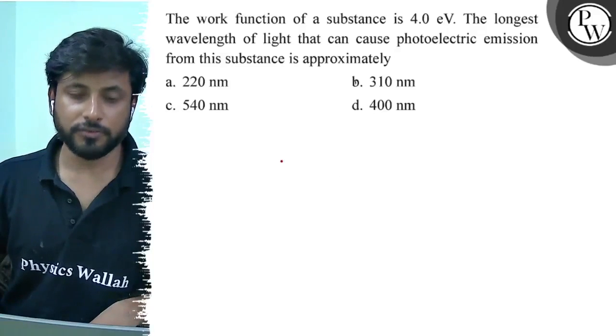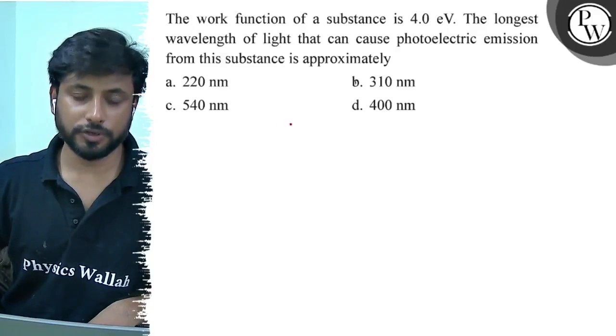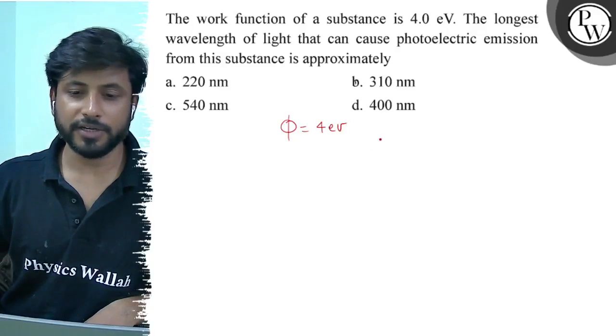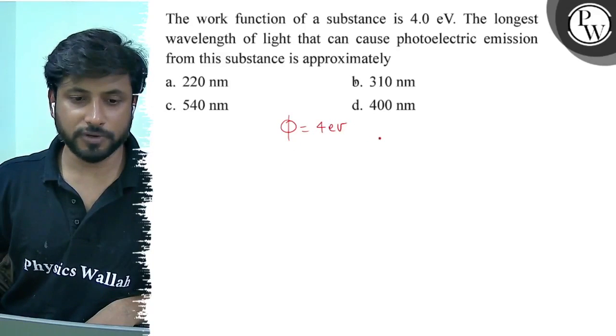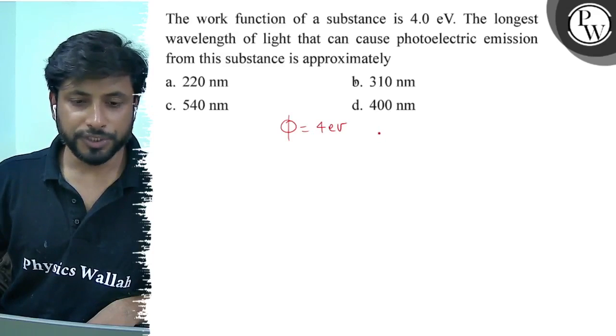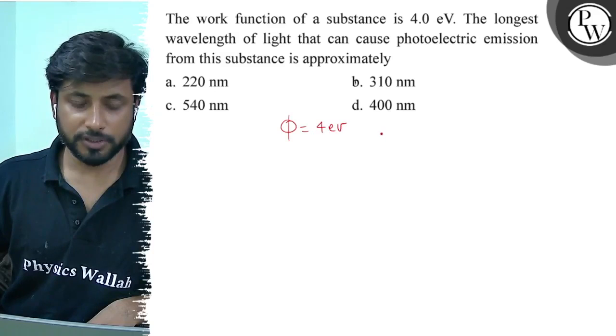Hello, let us see this question. The work function of a substance is 4 electron volt. The longest wavelength of light that can cause photoelectric emission from this substance is approximately 220 nanometer, 310 nanometer, 540 nanometer, or 400 nanometer.